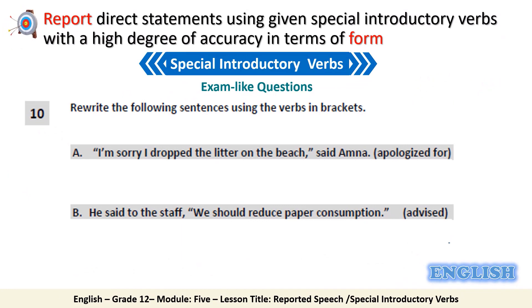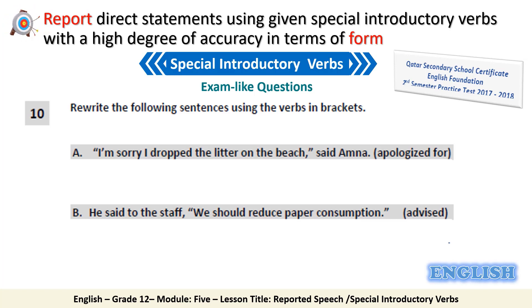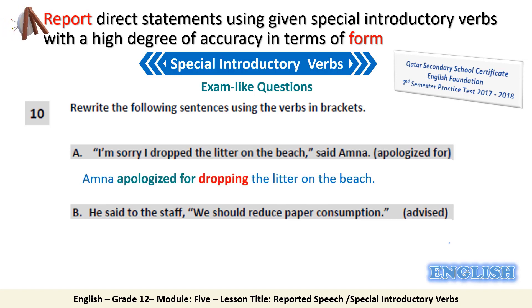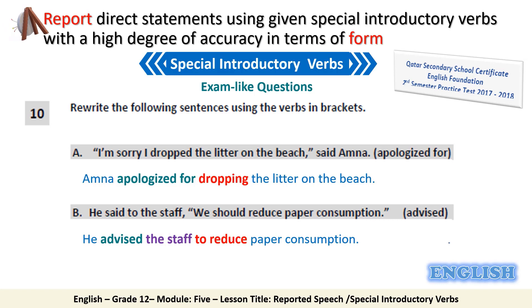The second type of exam-like question appeared in the practice test of 2017–2018. For sentence A using 'apologized for': 'I'm not — apologized for dropping the letter on the beach.' Your answer will be marked on the use of the -ing form after 'apologized for.' For sentence B using 'advised': 'He advised the staff to reduce paper consumption,' paying attention to using the infinitive form and the indirect object 'the staff.'